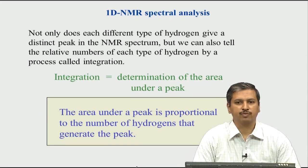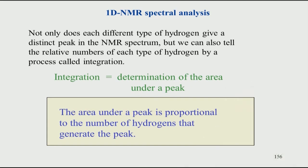The main thing about the intensity of a peak: intensity is basically the area, and the area is proportional to the number of hydrogens that generate the peak. This is a very important point — the area gives you the total number of protons. Therefore, we do not look at the absolute area but only at the relative intensity. For example, if you have CH3, CH2, and OH — suppose you take ethanol — you expect the methyl peak CH3 to have three times the intensity of the OH peak, which has only one hydrogen. The number of hydrogens is obtained relatively from the integration value, which is very helpful for interpretation.